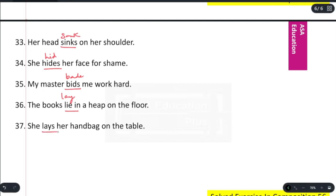This Exercise Number 56 is on irregular verbs. Now we will see the next exercise number. Subscribe to Asa Education.